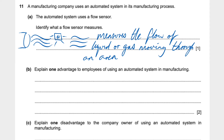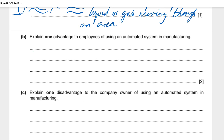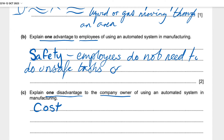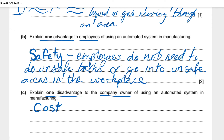Explain one advantage to employees of using an automated system in manufacturing, and one disadvantage to the company owner. So we're looking at two different perspectives. For the employee's advantage, I would say safety — employees do not need to do unsafe tasks or go into unsafe areas in the workplace. That's my number one point. You could also put down repetitive tasks — employees don't need to do that kind of piece work over and over again.